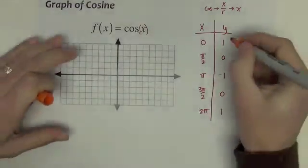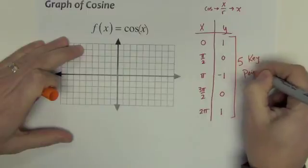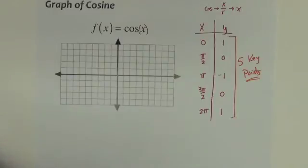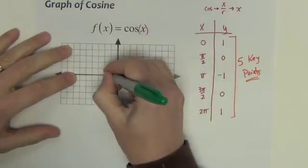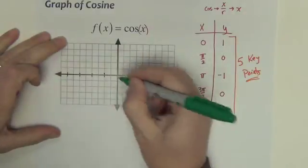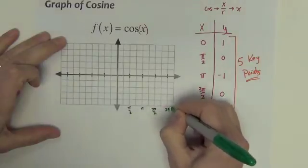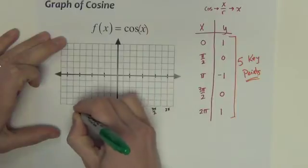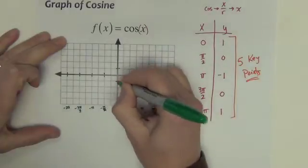So just like in the sine graph, we had 5 key points. These are our 5 key points for cosine. Same numbers. There are 1's and 0's and negative 1's. They're just in different places. I'm going to go ahead and mark up my axis the same way. So the first one I'll mark for pi over 2, then pi, then 3 pi over 2, then 2 pi. The negatives are on the other side. And we'll just go 1 and negative 1 there.